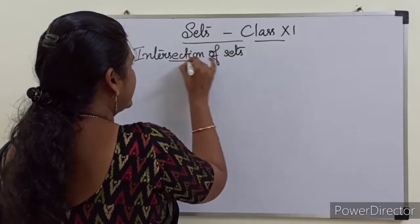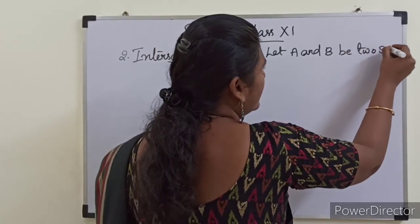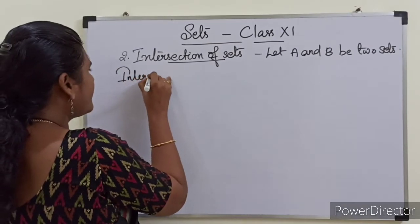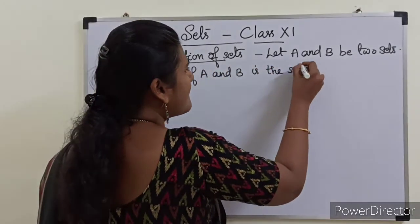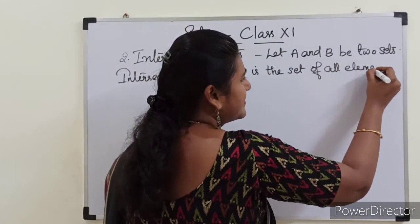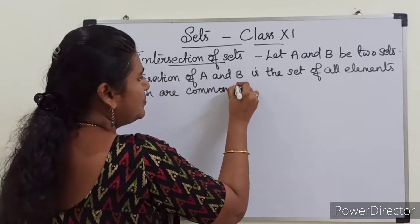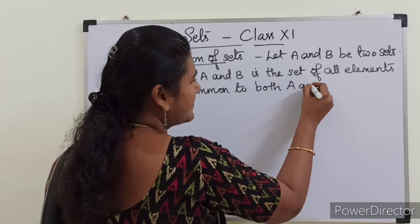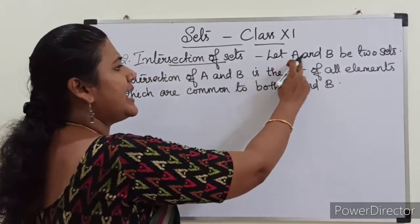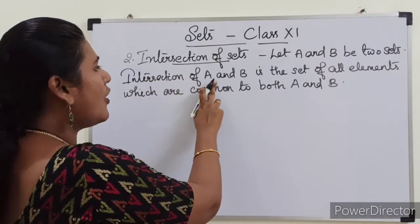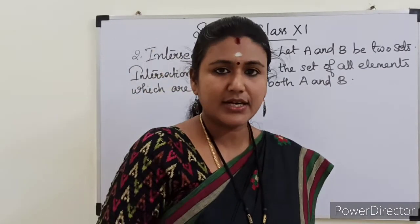So intersection of sets. Let A and B be two sets. Then intersection of A and B is the set of all elements which are common to both A and B. So this is actually the definition of intersection of sets.